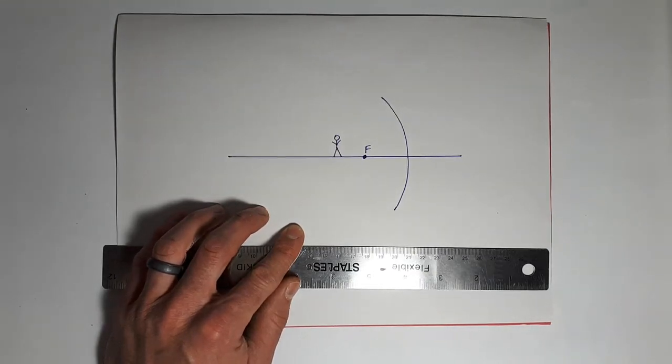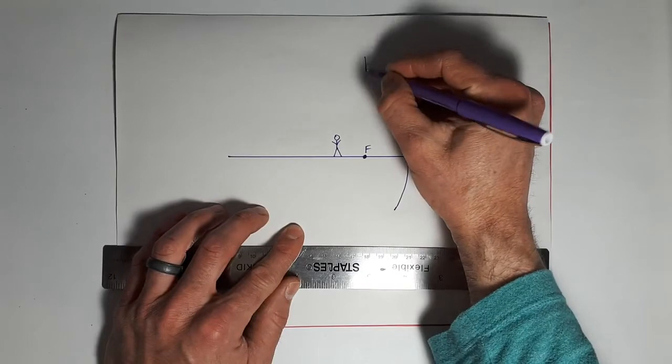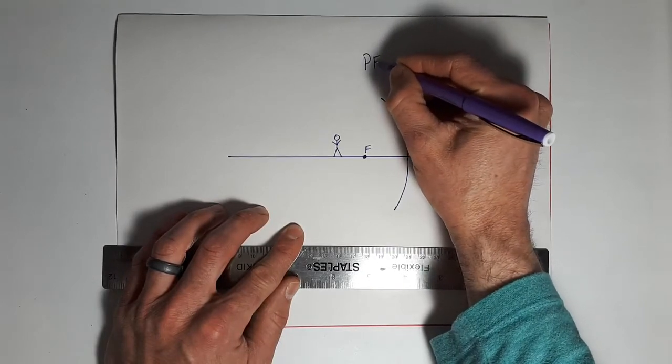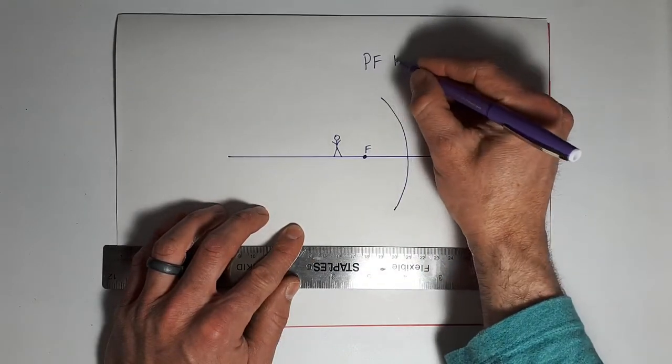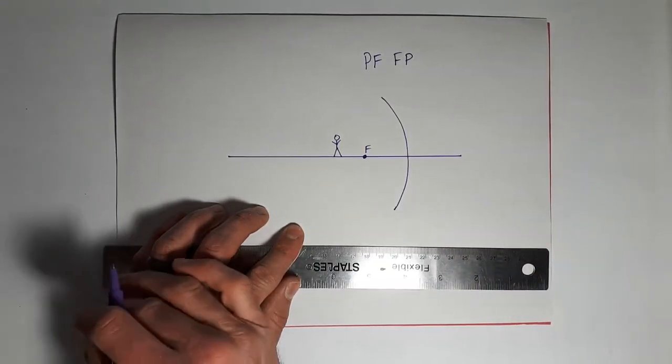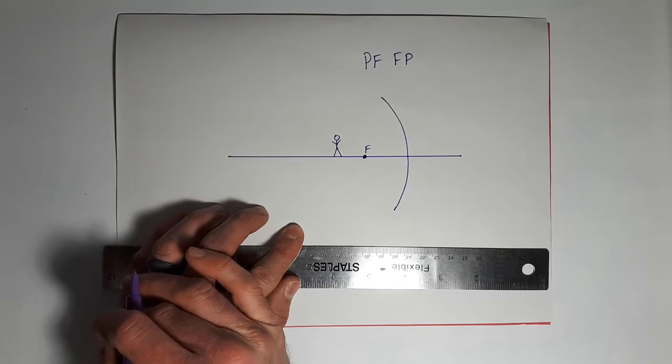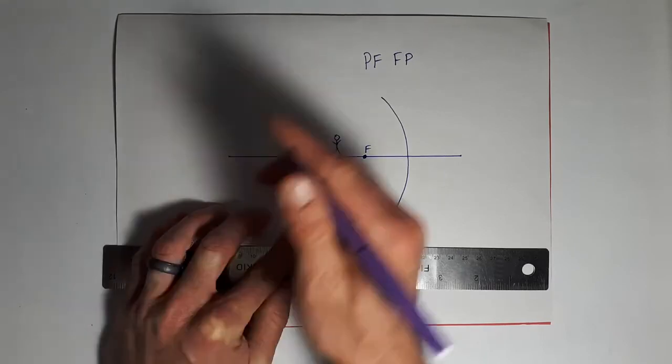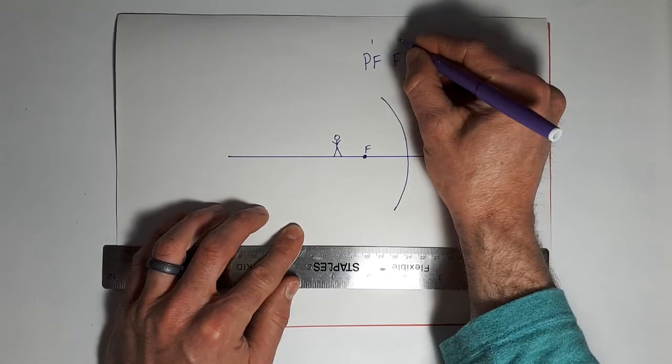And we have parallel foyer and foyer parallel. All right. So this is really just a two-part way to do this. Okay. So this would be part one, and this would be part two.